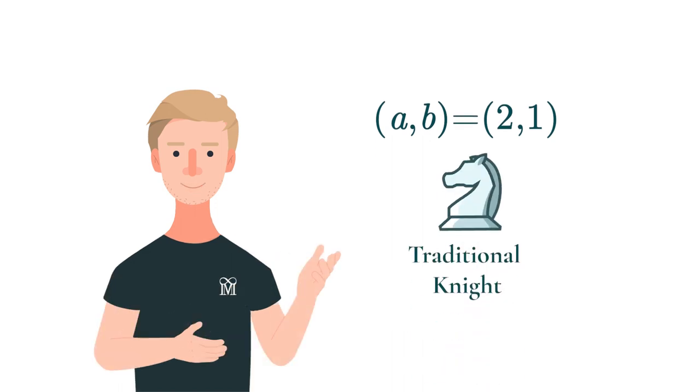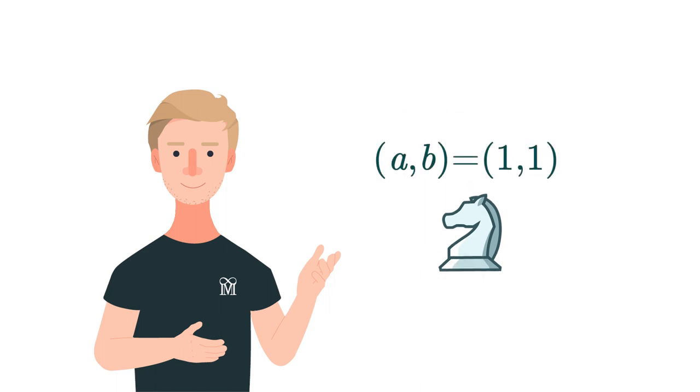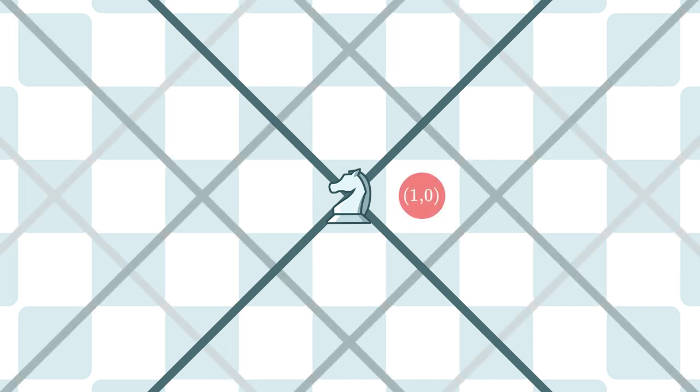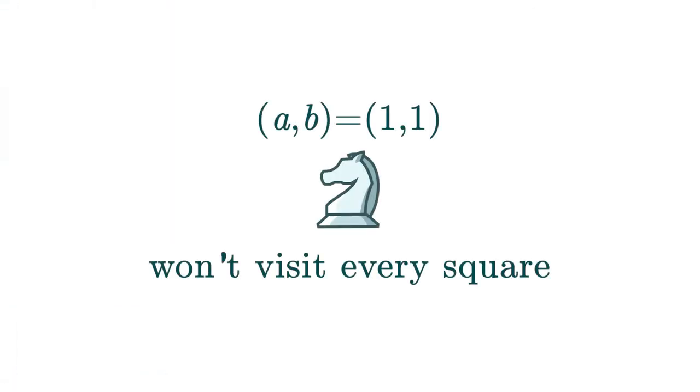Now let's explore for a bit by choosing certain values of a and b. For a,b equals 2,1 we are already done, because 2,1 Knight is the traditional one. We can choose something similar, for example a,b equals 1,1. This case is very interesting, because 1,1 Knight can only move diagonally, and hence it will never reach 1,0 square. Therefore, it won't visit every square.